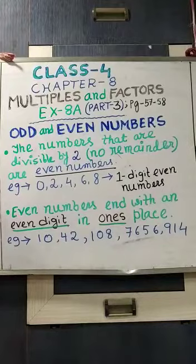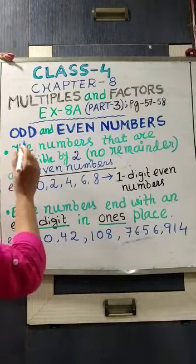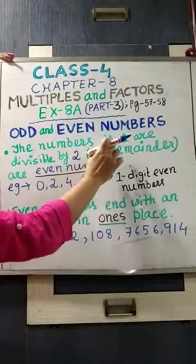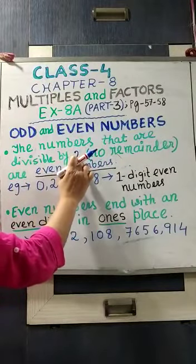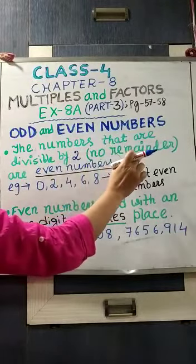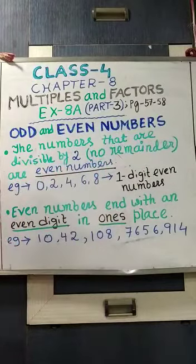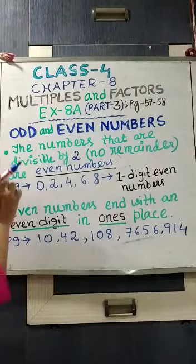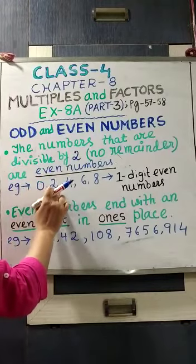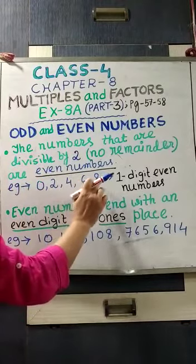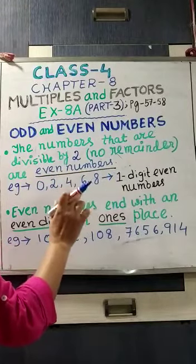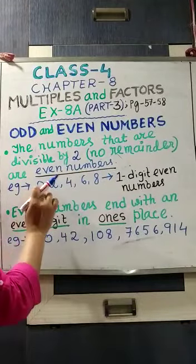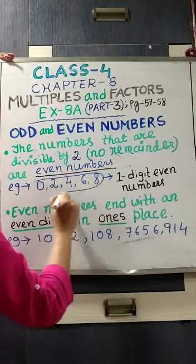Today we will learn odd and even numbers. You see that I have written the numbers that are divisible by 2 — that means there will be no remainder — or even numbers: 0, 2, 4, 6, 8. These 5 are the one-digit even numbers. These you have to remember, these 5 numbers.